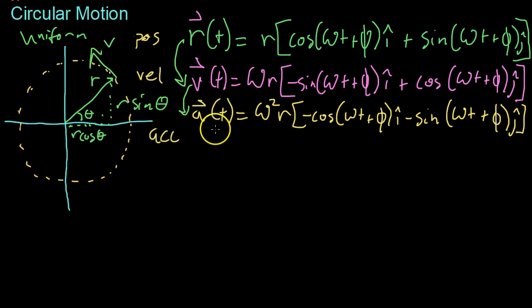And so you get the acceleration vector at any given point is omega squared r, and then it has the exact opposite components, you'll notice, of the initial position vector. So where r had components positive r cosine theta and positive r sine theta, a has components negative r cosine theta right here and negative sine theta. So a must then naturally point in the exact opposite direction of r.